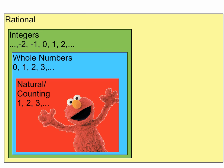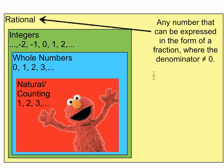Rational numbers, anything that can be written in the form of a fraction where the denominator is not going to equal zero. Those are all examples there of rational numbers.